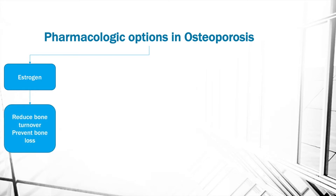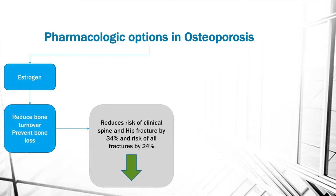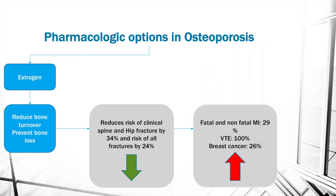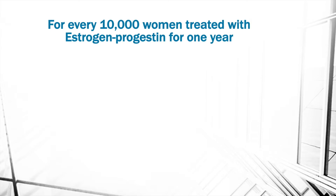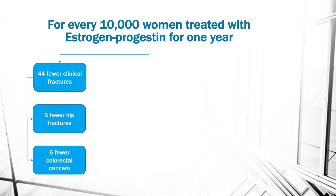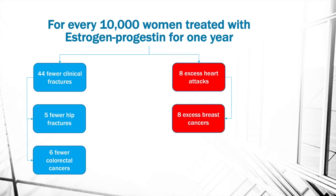Estrogen reduces bone turnover and prevents bone loss, reducing the risk of clinical spine and hip fractures by 34% and all fractures by 24%. Disadvantages include a 100% increase in venous thromboembolism, a 26% increase in breast cancer, and a 29% increase in fatal and non-fatal myocardial infarction. For every 10,000 women treated with estrogen-progestin for one year, there are 44 fewer fractures, 5 fewer hip fractures, and 6 fewer colorectal cancers, but 8 excess heart attacks, 8 excess breast cancers, and 18 excess venous thromboembolisms.